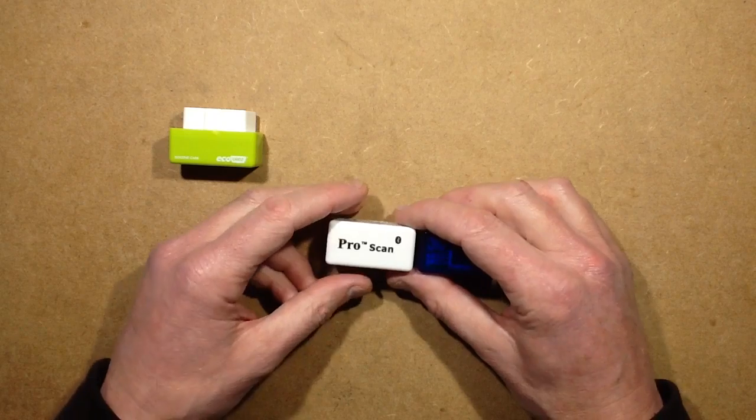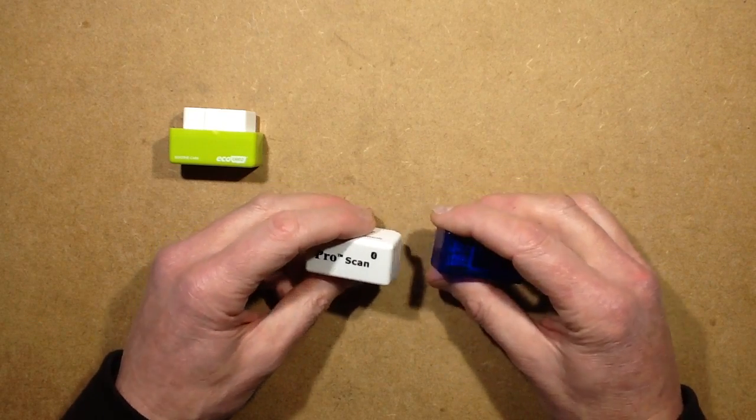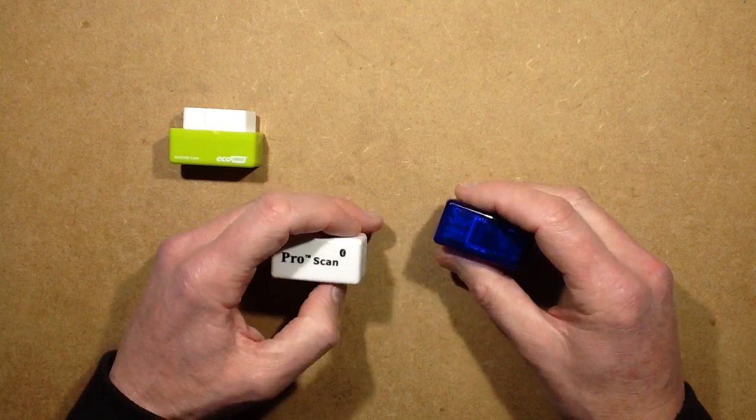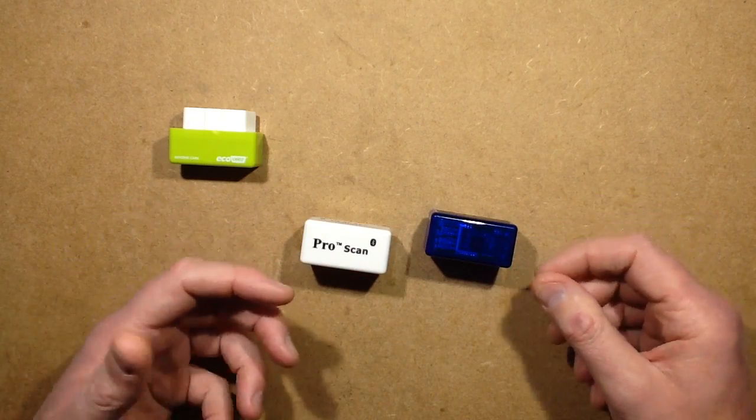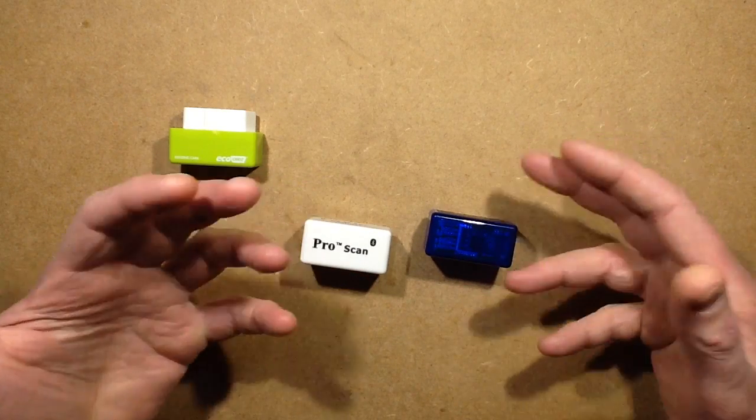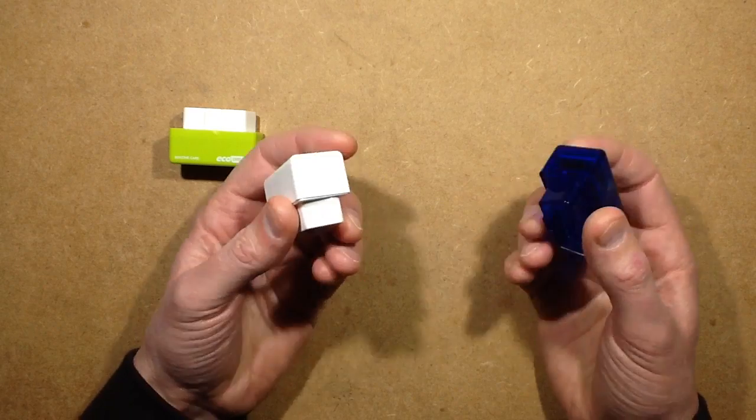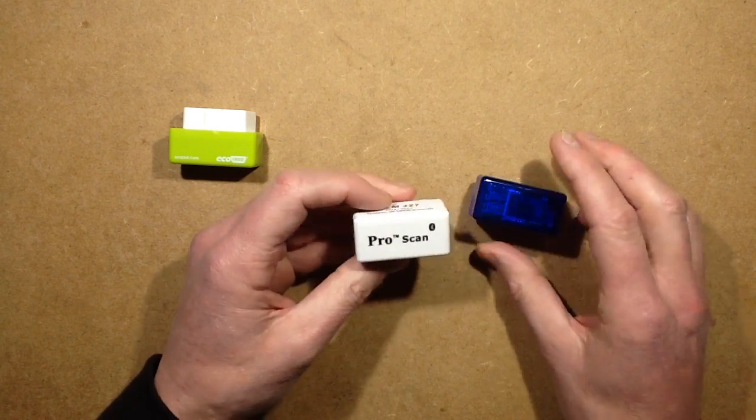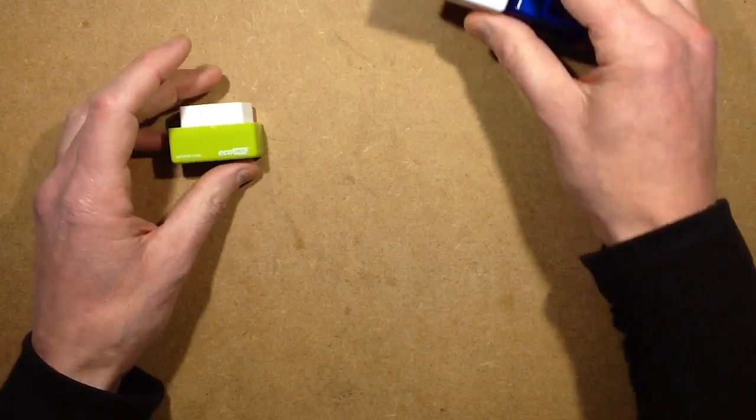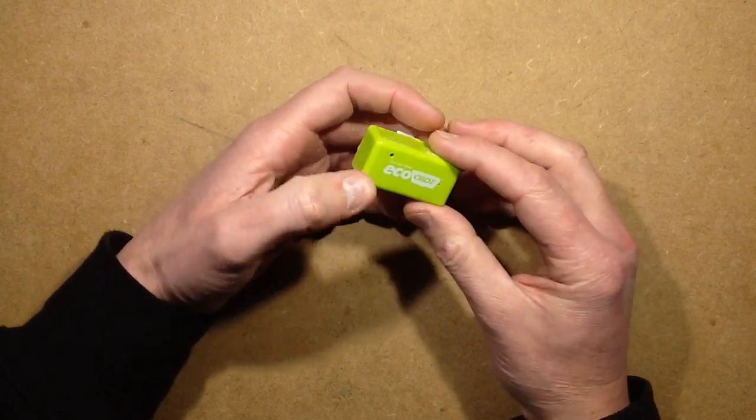The nice thing about the Torque application is it lets you log these while you're driving, so it can also detect faults occurring - misfiring of cylinders or fuel blockages. It can also be used to reset warning lights if something has caused a blip in your engine, maybe water got onto a connector and caused a false oxygen reading.